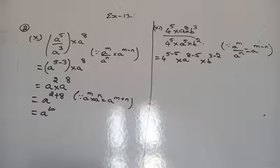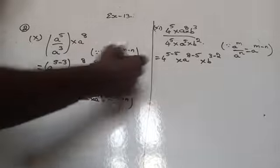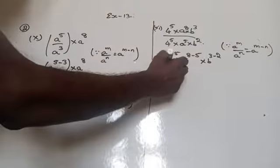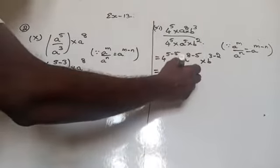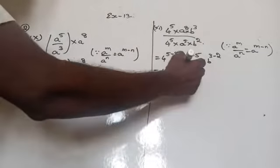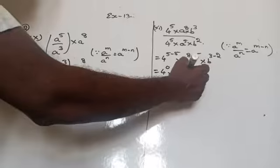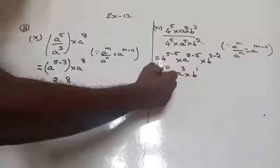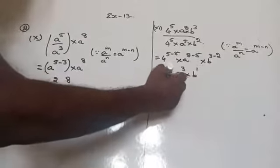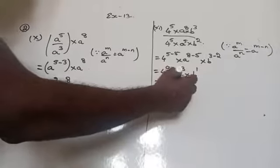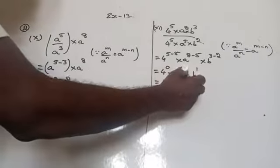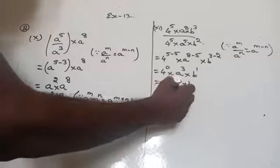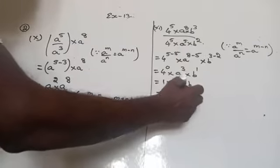So 4 to the power 5 minus 5 is 0, and anything to the power 0 is 1. Then a to the power 8 minus 5 is a power 3, and b to the power 3 minus 2 is b power 1, which is b. So the answer is 1 into a power 3 into b, that means a power 3 into b.